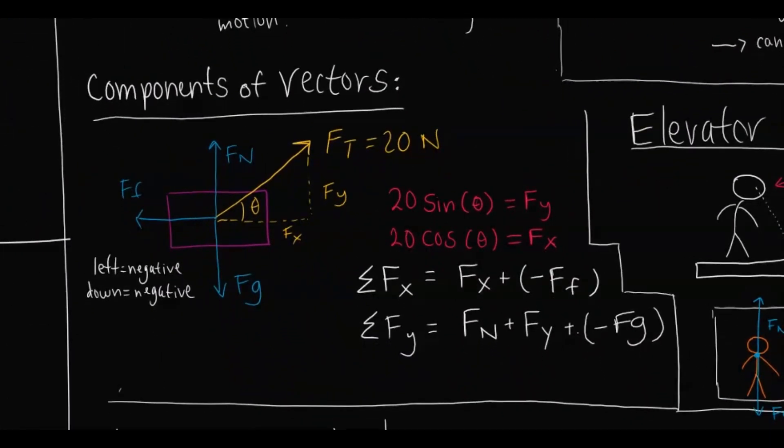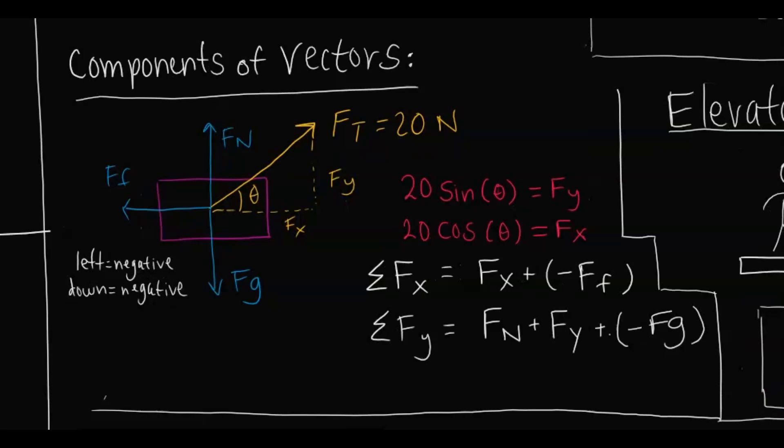Next, components of vectors — this was also covered in the kinematics review, which I'd recommend checking out. If you pull a sled at an angle, the force of tension doesn't act equally in all directions. To observe the effects of that force, you have to break it into its x and y components. You need to know theta, the angle the force makes with the horizontal, and then use trigonometry to find each component.